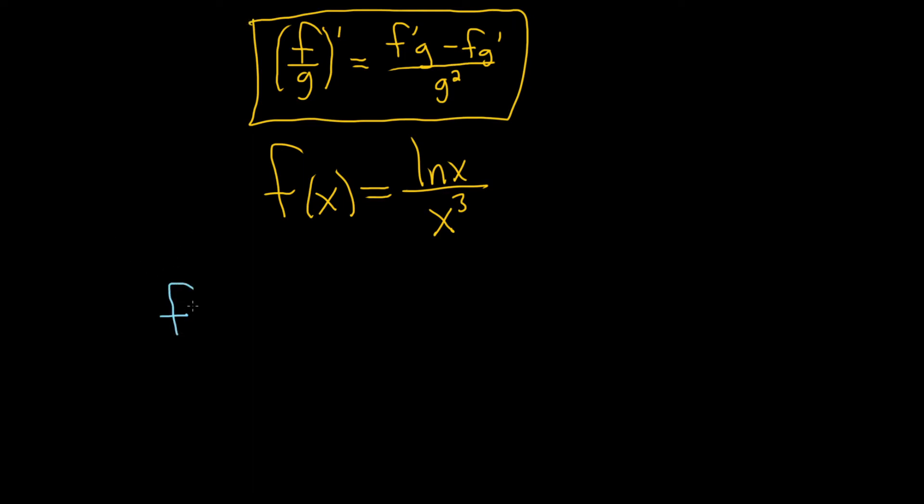So let's do it. So we have the derivative of our function f. And this is equal to, so this is our top function. So the derivative of the natural log of x is just 1 over x. It's a formula times the bottom.